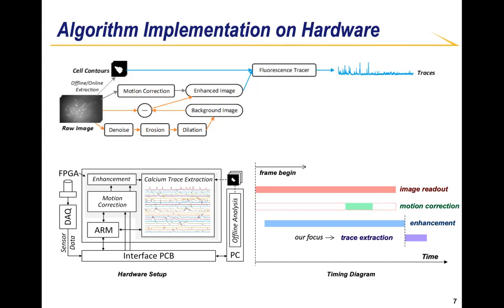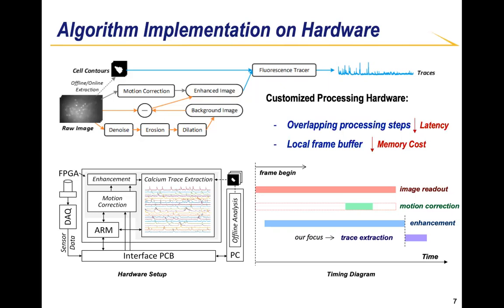The trace extraction needs to be applied on the motion-corrected and enhanced images, so it has to wait for the enhancement step to finish before it can start. We define the latency as the time interval between the end of the image readout and the end of the overall calcium image processing for the current frame. Since we can overlap a lot of computation with the image readout, the latency can be largely reduced. We also built a local BRAM buffer to store the enhanced image, which helps eliminate off-chip DRAM accesses and improve efficiency.